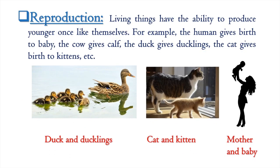Reproduction is the main feature of living things. Living things have the ability to produce younger ones like themselves. For example, the human gives birth to a baby, the cow gives a calf, the duck gives ducklings, and the cat gives birth to kittens.